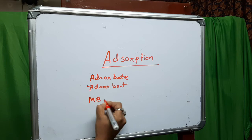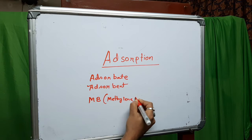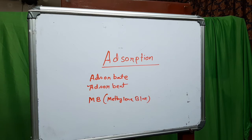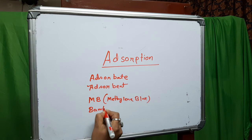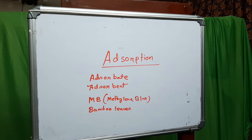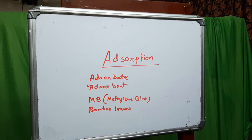MB means methylene blue. In this experiment we choose methylene blue as an adsorbate and bamboo leaves as an adsorbent. Generally adsorbents are solid. You can also choose activated carbon or other leaves as an adsorbent, and similarly any other toxic component which you want to remove as an adsorbate.